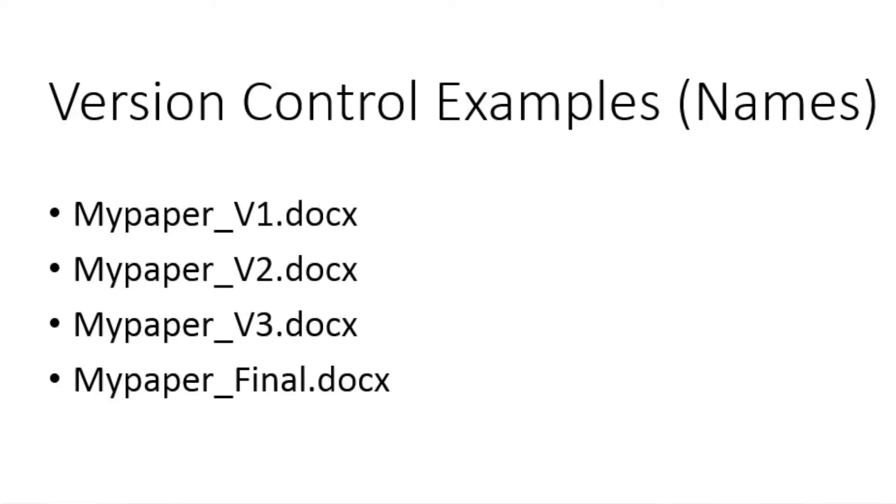There are really two versions of version control I want to talk about in this video. The first is a very simple way to do version control. The simple method just involves naming your files differently and periodically saving your document to a new version of the file. So if you have a file called 'my paper,' instead of just naming it that, you'd name it 'my paper-v1' or 'my paper-v2,' all the way up until you get to the final version. You can look through this whole history and see snapshots at particular points in time and identify the final version of your document.